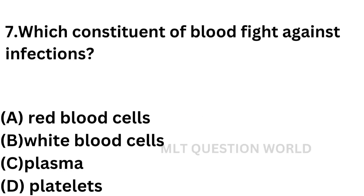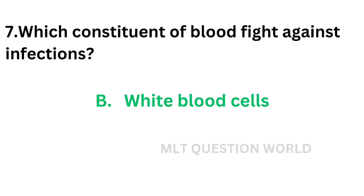Question number 7: Which constituent of blood fights against infections? Option A: Red blood cells. Option B: White blood cells. Option C: Plasma. Option D: Platelets. Neutrophils are the first cells to appear to fight against infections. The correct answer is option B: White blood cells. White blood cells fight against infections.